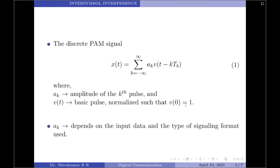Note that the value of coefficient AK depends on the input data as well as the type of signaling format used. For example, if we use a unipolar signaling format, then AK equals 0 for symbol 0 and equals 1 volt for symbol 1. On the other hand, if we use a polar format, AK equals minus 1 for symbol 0 and plus 1 for symbol 1.